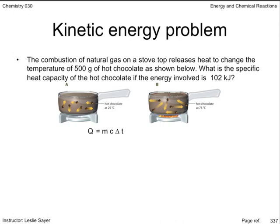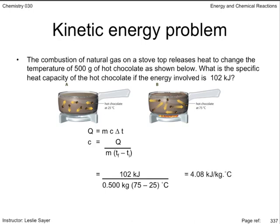Again, re-express the kinetic energy equation, and before adding in values, algebraically manipulate the expression so that it is in terms of what you're looking for. Add in the values from the question. Notice I've converted the mass from grams to kilograms — I could just as easily have converted the energy from kilojoules to joules; either way, the answer will be the same. Present the answer to the indicated number of significant digits. The magnitude of the answer is exactly the same in kilojoules per kilogram degree Celsius as it would be in joules per gram degree Celsius.